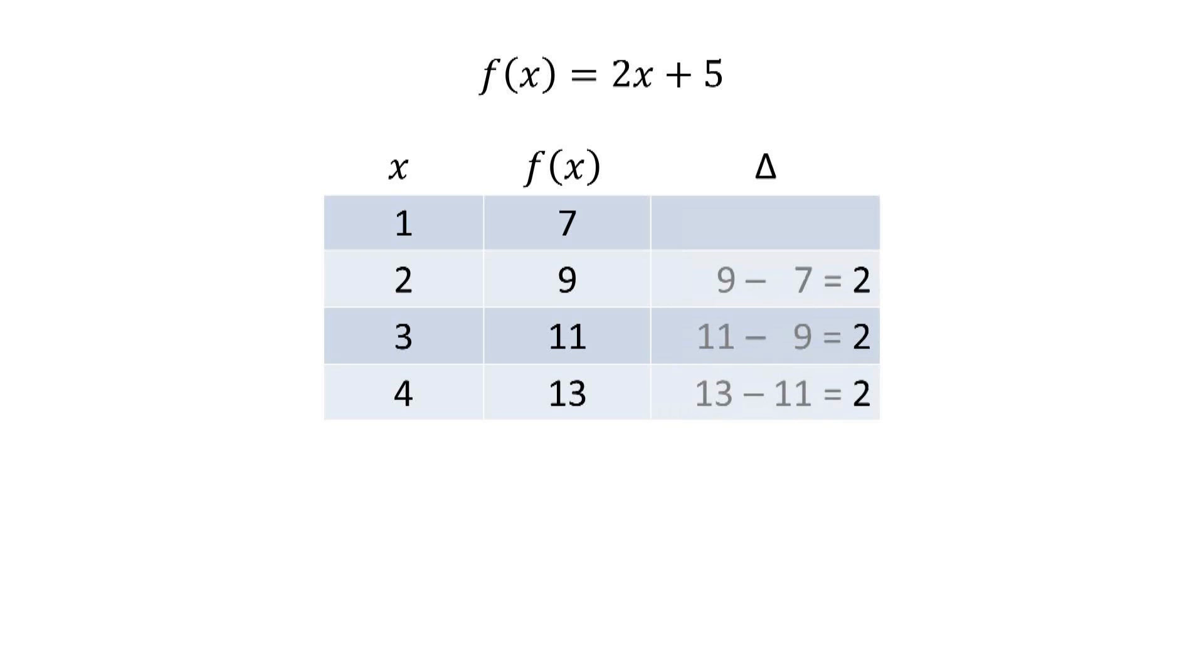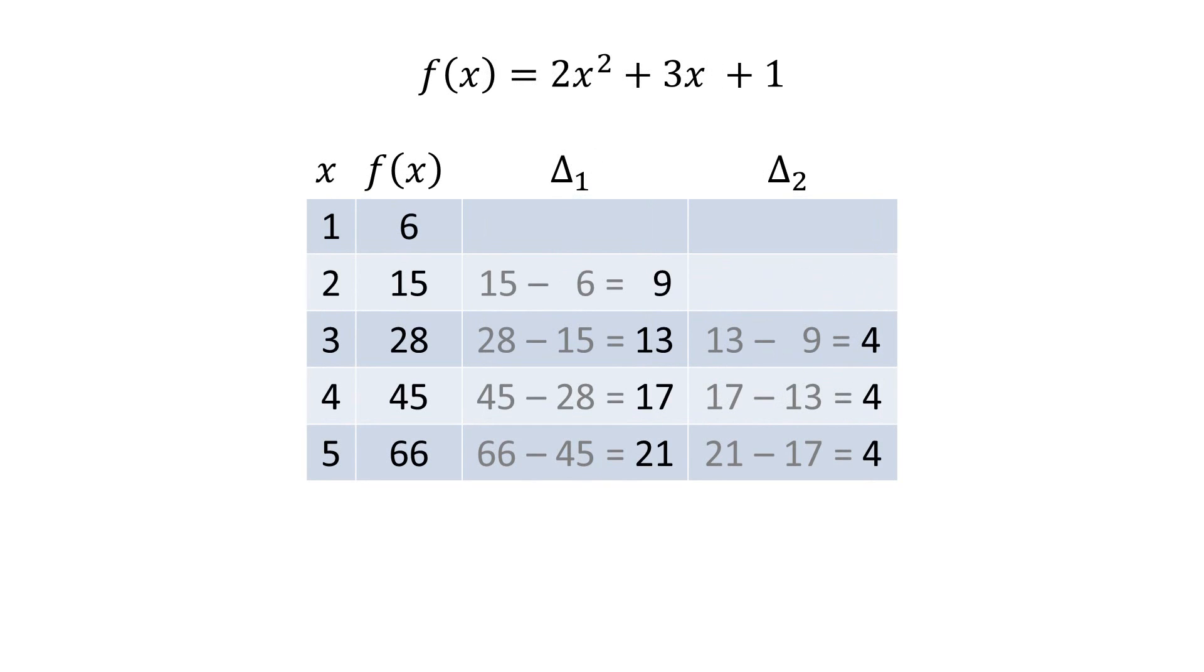A similar thing holds for second degree polynomials, like f(x) = 2x² + 3x + 1, except that now we have to compute two columns of differences before we get a constant value.